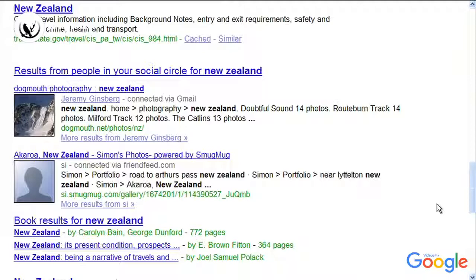Once Google builds your social circle, things are pretty simple after that. We take our regular web index data and annotate it with social information. When our algorithms determine that it would improve your search experience, we surface public content from your social circle at the bottom of the search results.